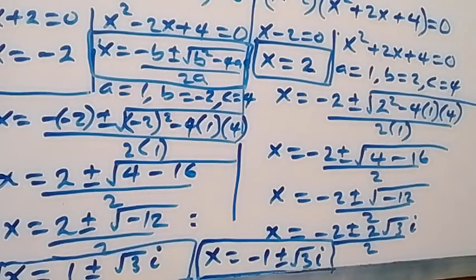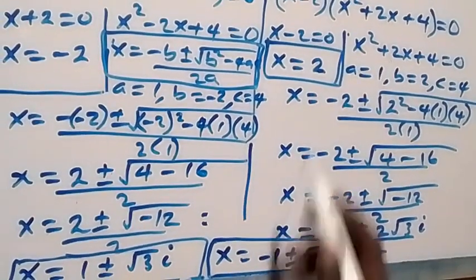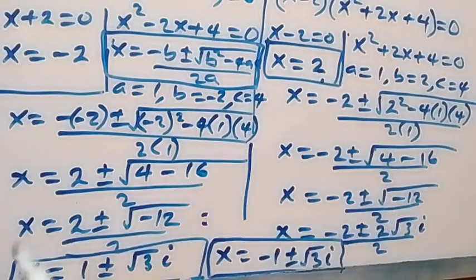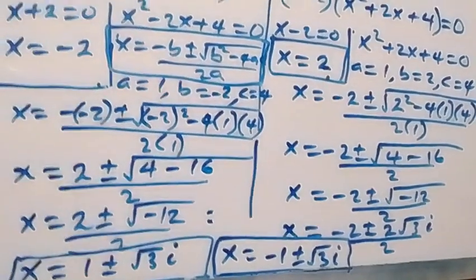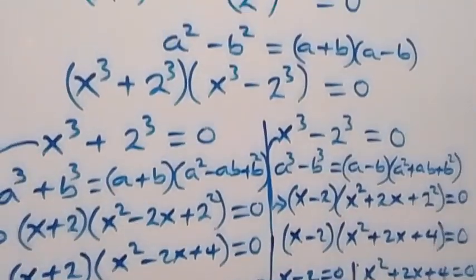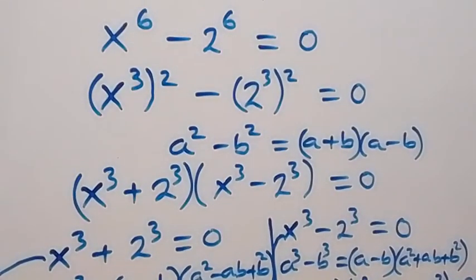So all together we have six solutions: the two real solutions x equals 2 and x equals minus 2, and two complex solutions from Case 1, x equals 1 plus or minus root 3i, and two complex solutions from Case 2, x equals minus 1 plus or minus root 3i. Thank you for watching — don't forget to subscribe to my channel, turn the notification bell on, and give this video a thumbs up. See you next class, bye for now.